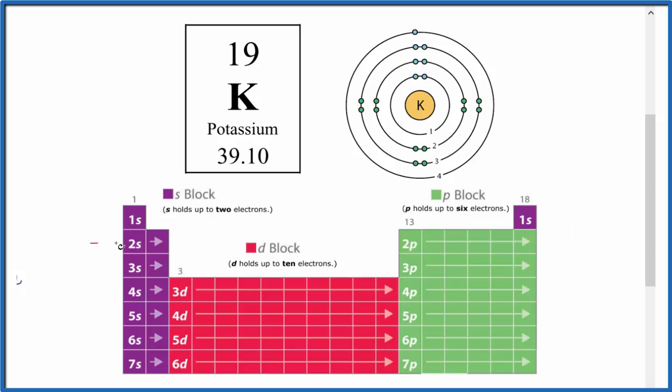So we go to the second energy level or the second period here on the periodic table. That has 1, 2, 3, 4, 5, 6, 7, 8. 2, 4, 6, 8 electrons in the second energy level. Now it's full. We've used 10 electrons for the potassium atom.